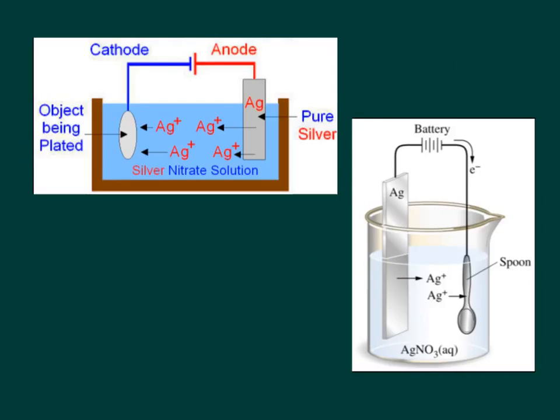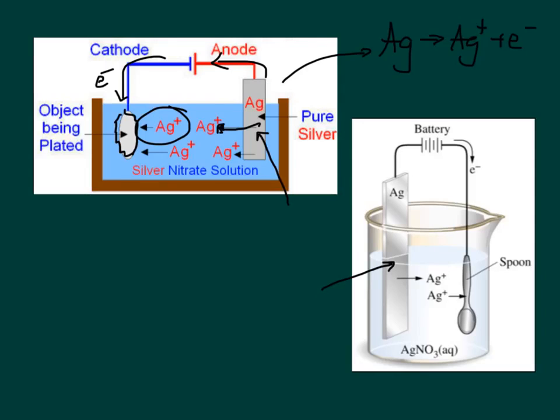So for instance, here, if we wanted to plate something in silver, we would use a silver anode, and at this anode, silver turns into silver ions and electrons. So the electrons go that away and the silver gets kicked into solution. And then the electrons come in here and they combine with the silver ion and it plates this. So for instance, if you used a silver electrode and a spoon, you could plate your spoon in silver and then you have a silver spoon.